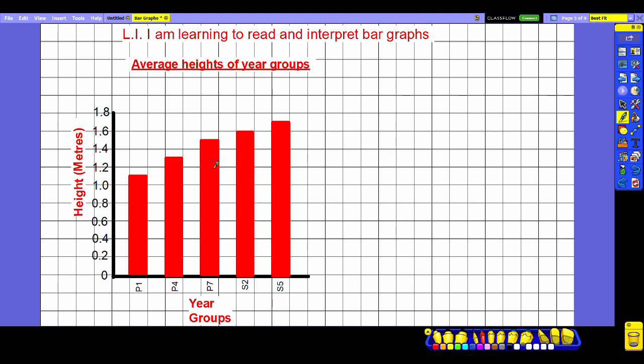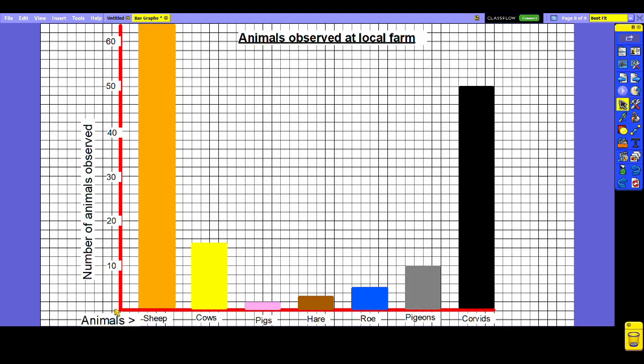It can be used to show things like the average heights of different year groups and in this case we can see it's going up in 0.2 meters at a time, so 0.1 meters would be half a box. Some graphs such as this one have lots of boxes on them but the numbers only put every once in a while at regular intervals. We can work out what each individual box is using our knowledge of scale.